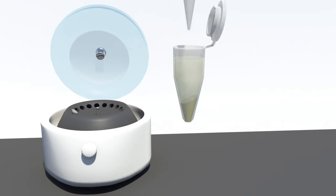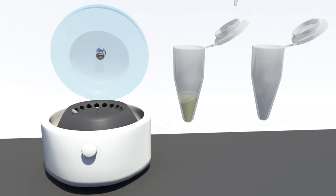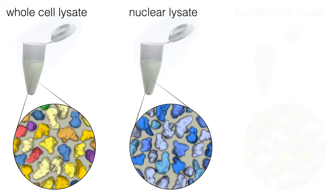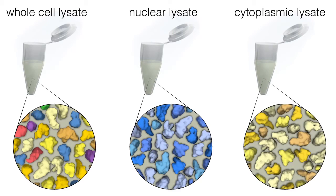The supernatant, now called a protein lysate, is separated from the pellet to use for Western blotting. The most common type is called a whole-cell lysate, because it contains all of the proteins within a cell. Two other commonly-prepared types are nuclear and cytoplasmic lysates, which contain only nuclear and cytoplasmic proteins respectively, often prepared to study the regulation of protein localization to these two compartments.